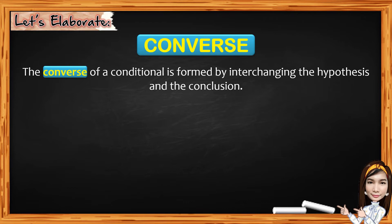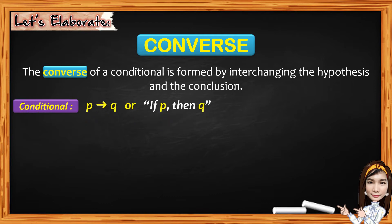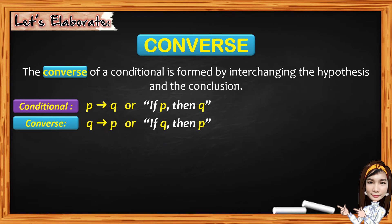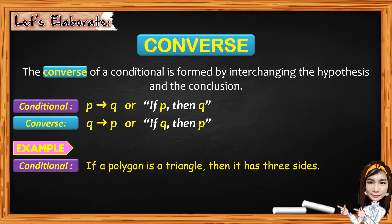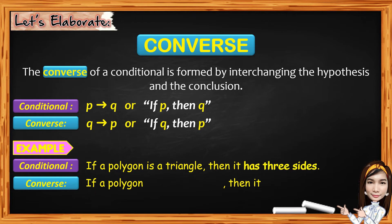The converse of a conditional is formed by interchanging the hypothesis and the conclusion. So for the conditional, we have P implies Q, or if P, then Q. And for the converse, we interchange the hypothesis and the conclusion, giving us Q implies P, or if Q, then P. For example, for the conditional: if a polygon is a triangle, then it has three sides. For the converse: if a polygon has three sides, then it is a triangle. Take note: in writing the converse, we write the noun on the if part and a pronoun on the then part.